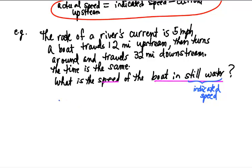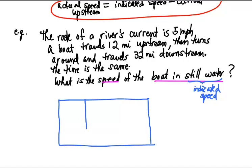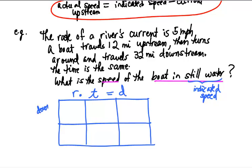To do this problem, we're going to set up a table with three columns and two rows. We're going to use rate times time equals distance. We know that speed times the time you traveled at that speed gives you the distance. In this problem we're going to have rows for downstream and upstream. When it comes to rate, we're talking about the actual speed.